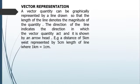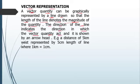Let's talk about how vector quantities can be represented. A vector quantity can be represented graphically using a line, where the length of the line denotes the magnitude of the quantity, and an arrowhead placed next to the line indicates the direction in which that vector quantity is acting.